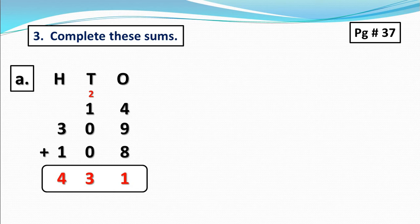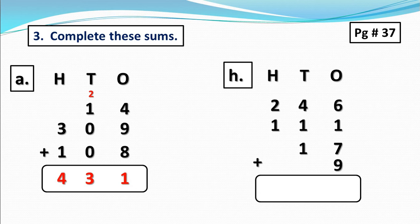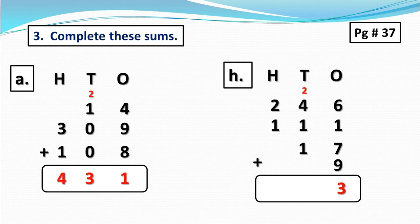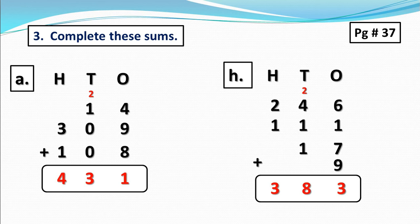Now I am going to solve part H of question 3. Start with the 1s column: 3 plus 1 equals 7 — wait, 7 plus 7 equals 14, and 14 plus 9 equals 23. But we cannot write 23 in the 1s column. So here we convert 23 ones into 2 tens and 3 ones. So in the 1s column we write 3, and put 2 tens into the 10s column above 4. Now add these 10s: 2 plus 4 equals 6, 6 plus 1 equals 7, and 7 plus 1 equals 8 — 8 tens. Now add the 100s: 2 plus 1 equals 3 — 3 hundreds. So the answer is 383.